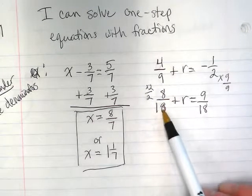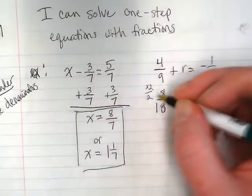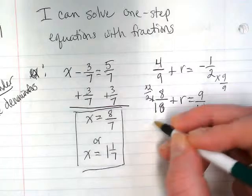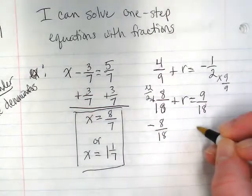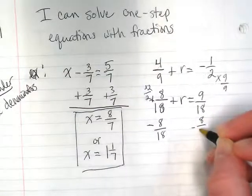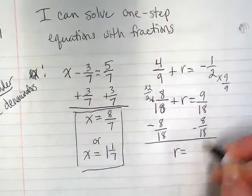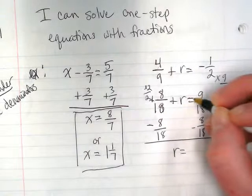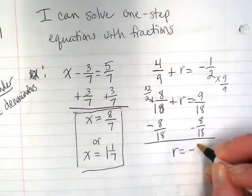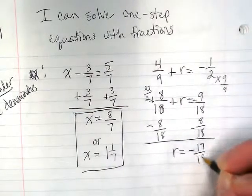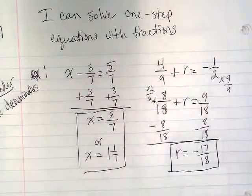Now I can look at my 8 18ths and realize there's no negative sign in front of it, so I have to do the opposite. Right now it has an invisible plus, so I'm going to subtract 8 18ths from both sides of my equation. And I end up with R is equal to, remember if I've got a negative 9 and a negative 8, that's going to become negative 17 over 18. That cannot be reduced, so it is finished.